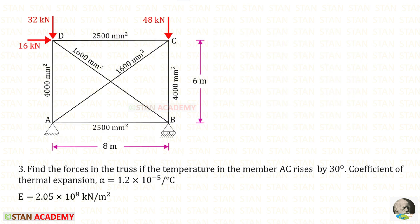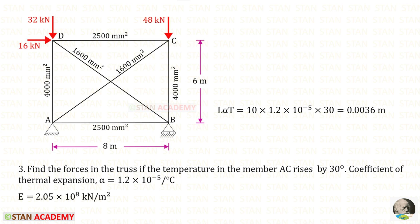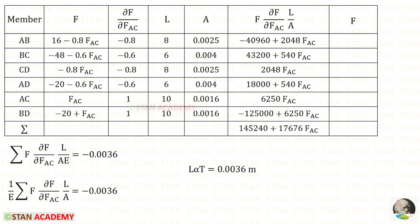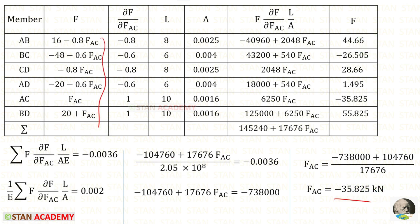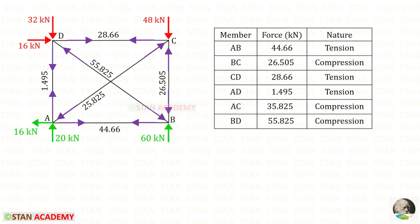Let us see one more problem. Find the forces in the truss if the temperature in member AC rises by 30°C. The coefficient of thermal expansion alpha and Young's modulus E are given. The thermal deflection is L × alpha × T: with L = 10 m for AC, we get 0.0036 m. This is applied as negative because when temperature rises, the member is under compression. Taking 1/E outside, applying the sum and E, we solve for FAC and substitute to get all member forces.